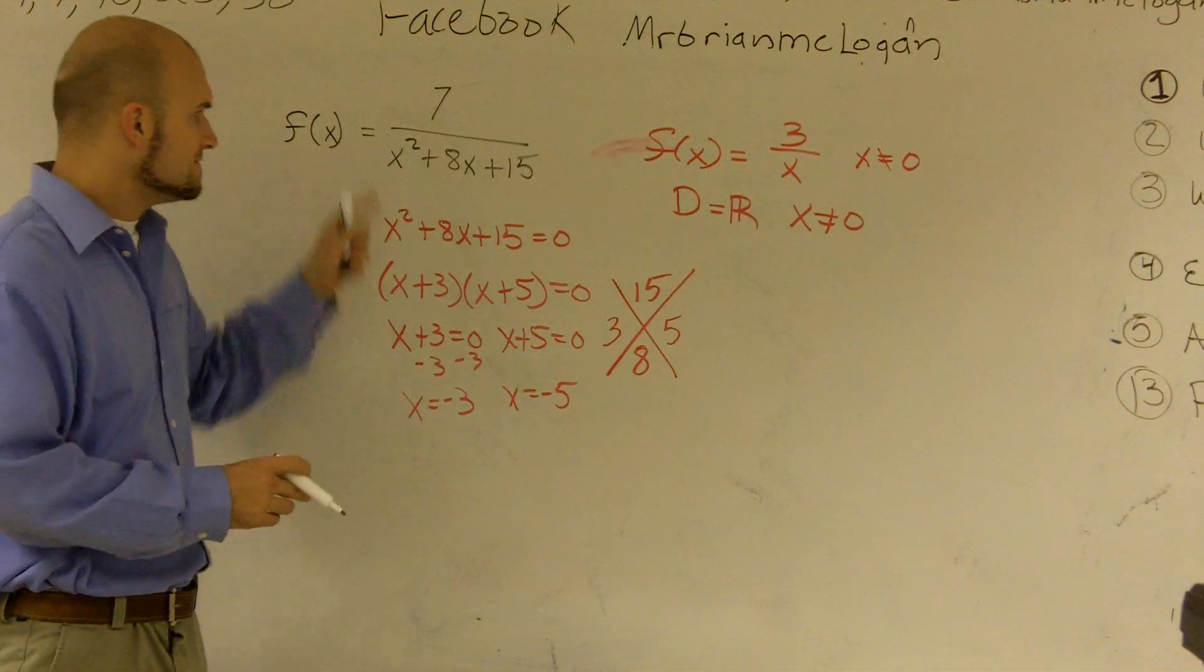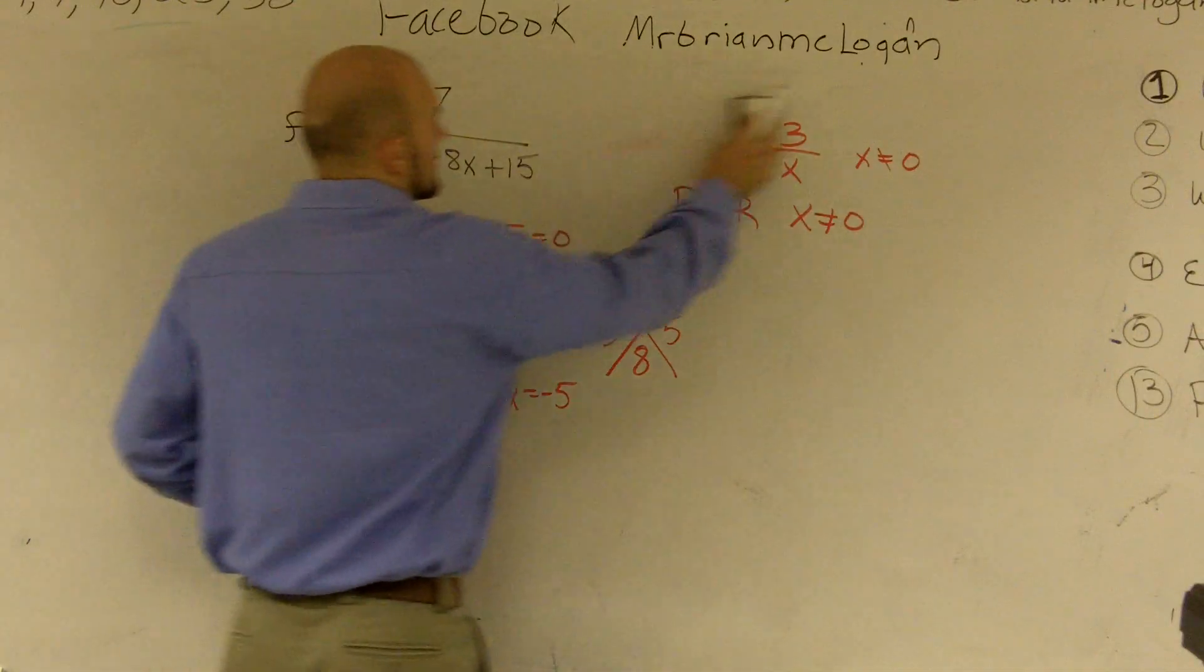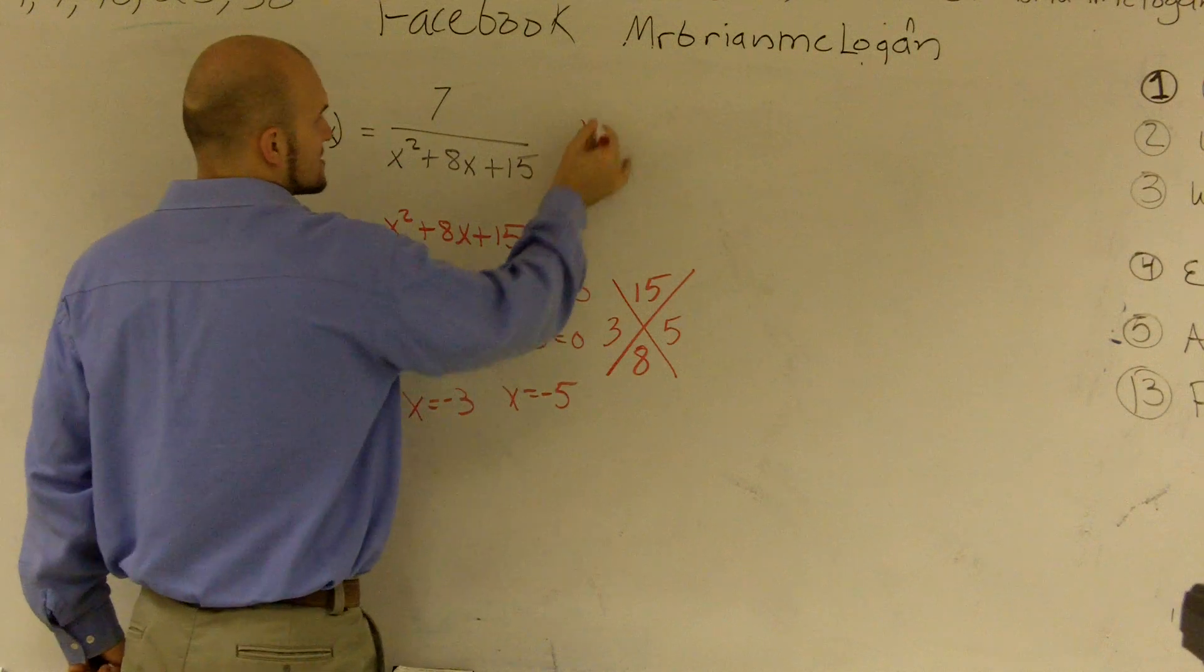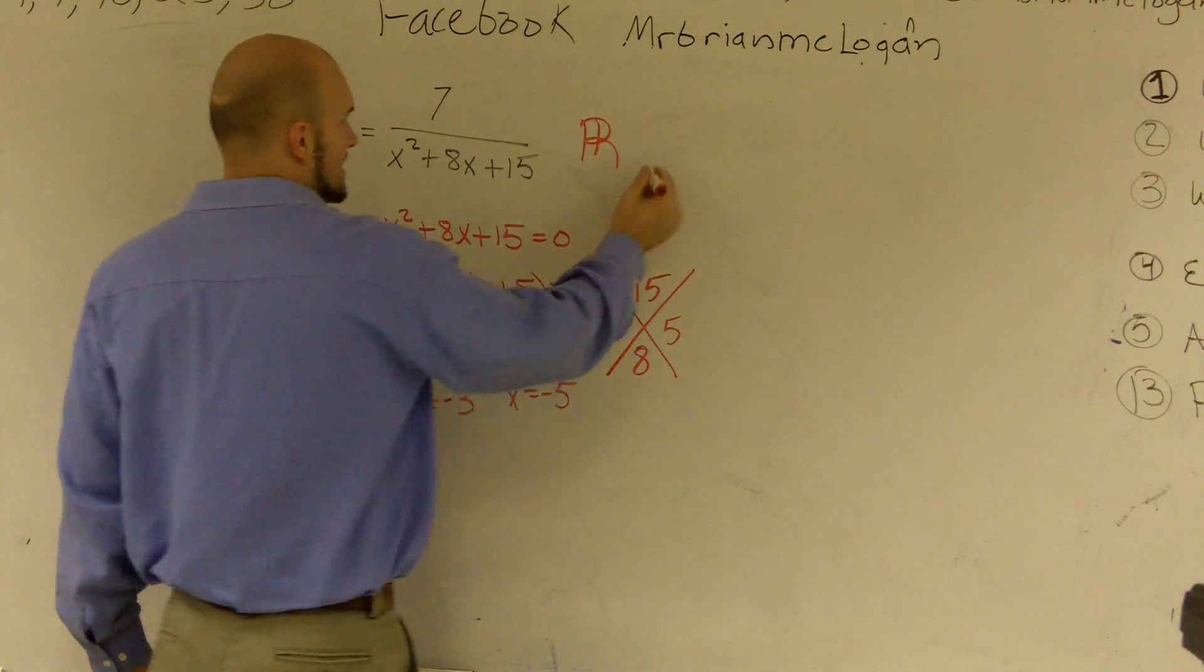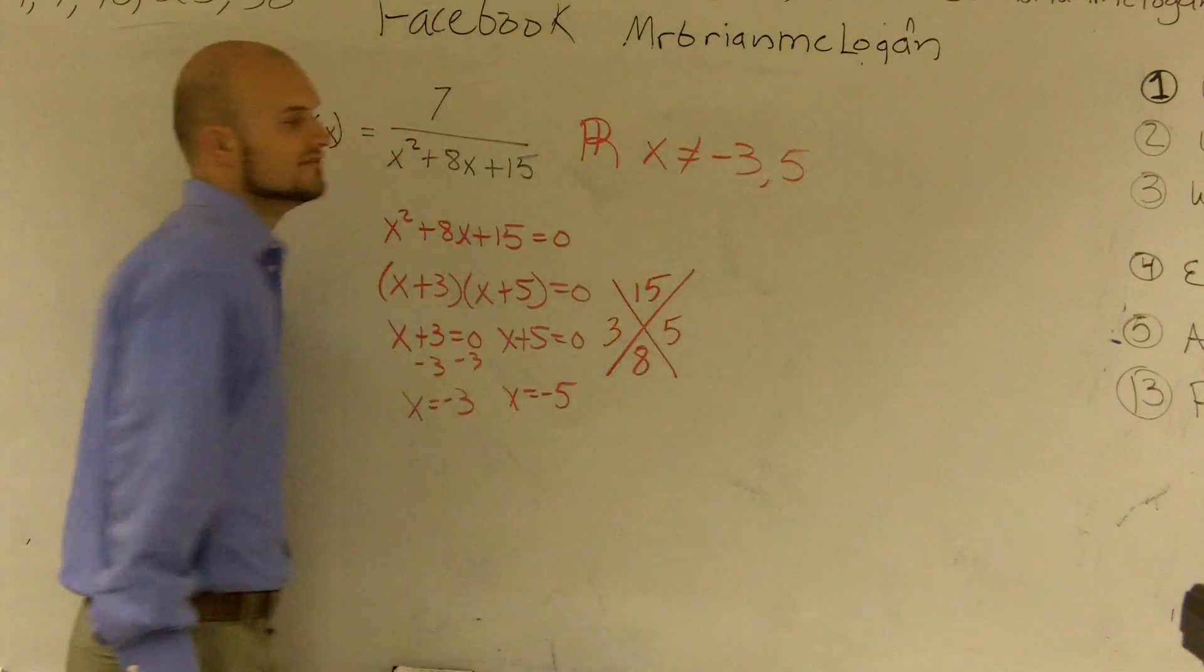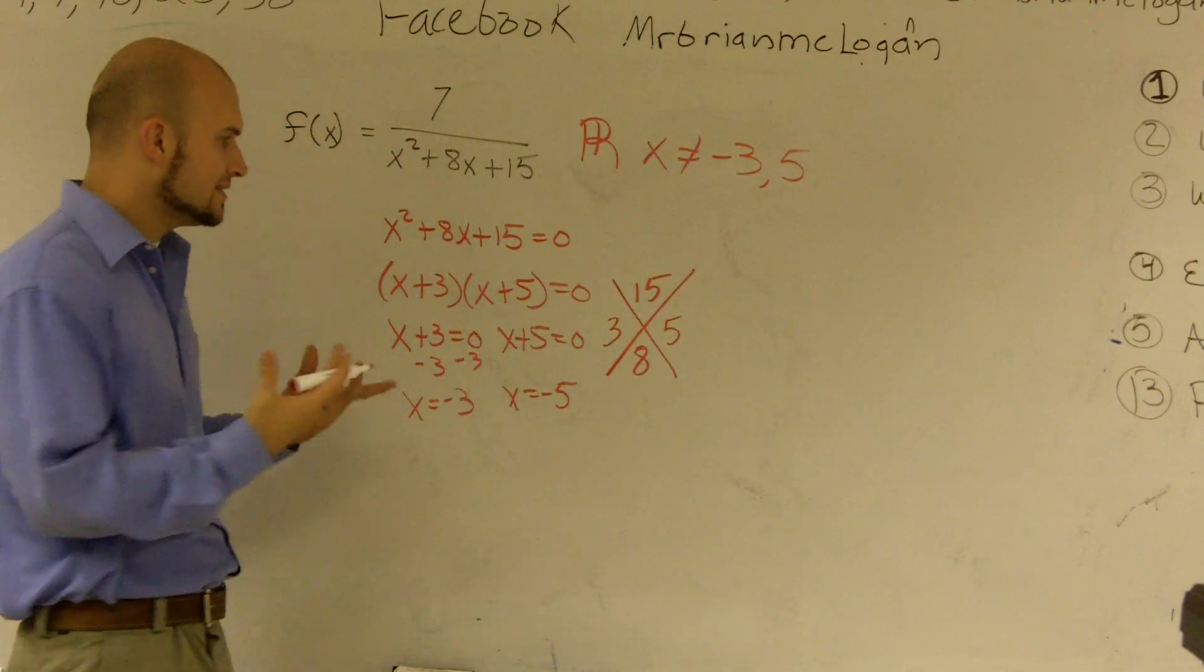So therefore, my domain for this problem is going to be all real numbers except x cannot equal negative 3 and negative 5. So when you're defining the domain, especially with a rational expression,